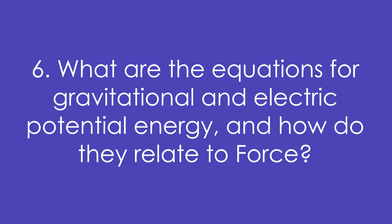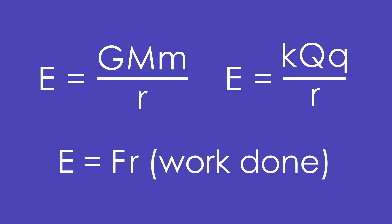Six, what are the equations for gravitational and electric potential energy, and how do they relate to force? Similar to the equations for force, they are GMm over r and kQq over r, not r squared this time. Why? Because we know energy, our work done is force times distance, so all we're doing is taking our force equation and times it by r.